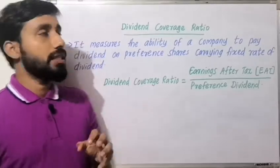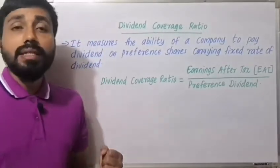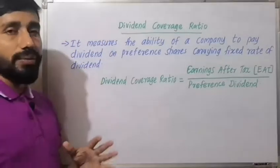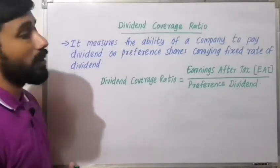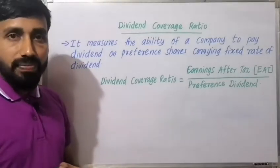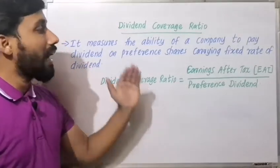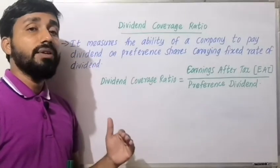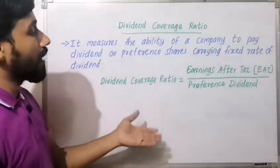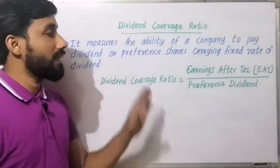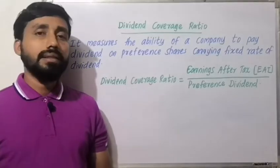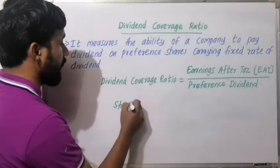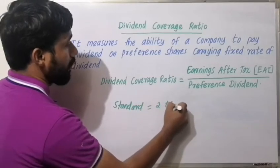The next coverage ratio is the dividend coverage ratio. The dividend coverage ratio measures the ability of a company to pay dividend on preference shares carrying a fixed rate of dividend. The formula is: Dividend Coverage Ratio = Earnings After Tax (EAT) divided by Preference Dividend. The standard dividend coverage ratio is 2 times.